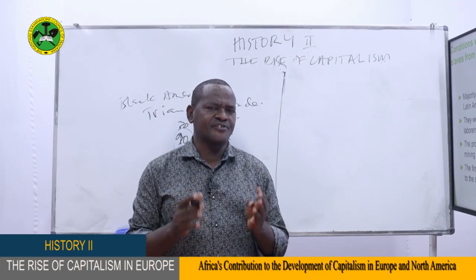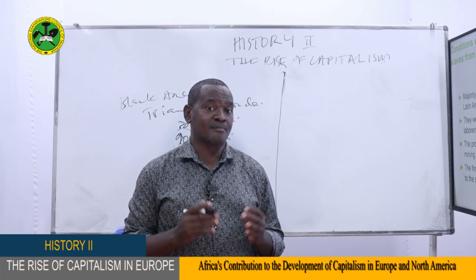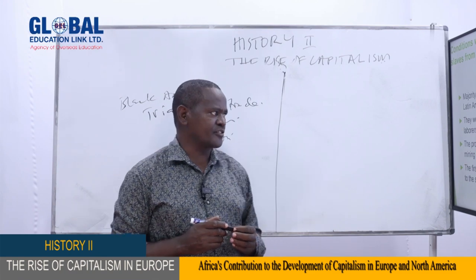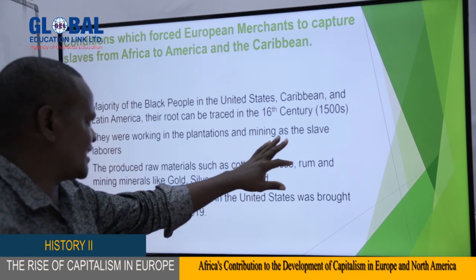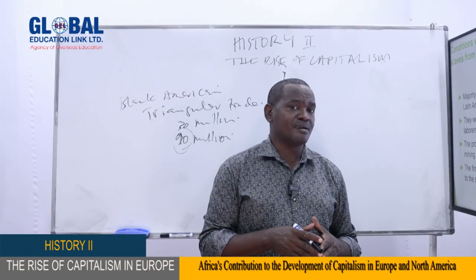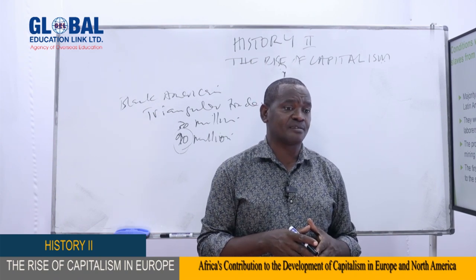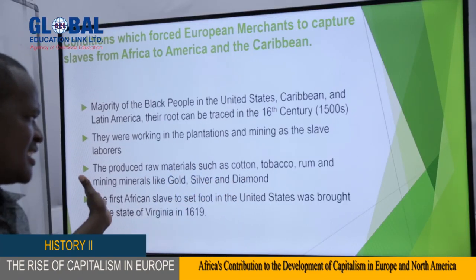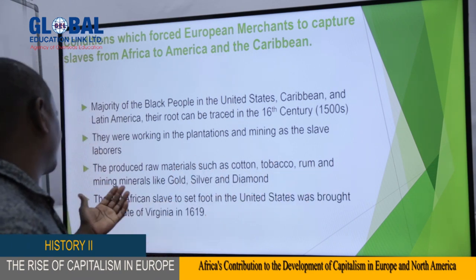In countries in the Caribbean such as Jamaica and Trinidad and Tobago, you will find quite a large number of black people, and their ancestors reached there through triangular trading. Those people taken to North America and West Indies were working in plantations and mines as slaves for quite a very long time — slavery lasted for 400 years. They were producing gold, silver, and diamond in the mines, and also raw materials like cotton, tobacco, and rum.